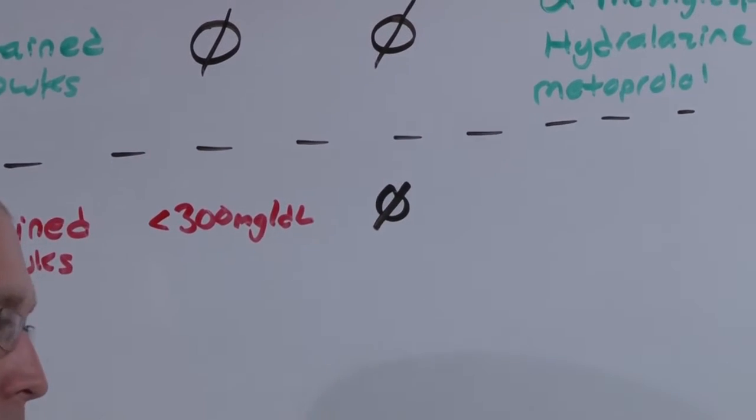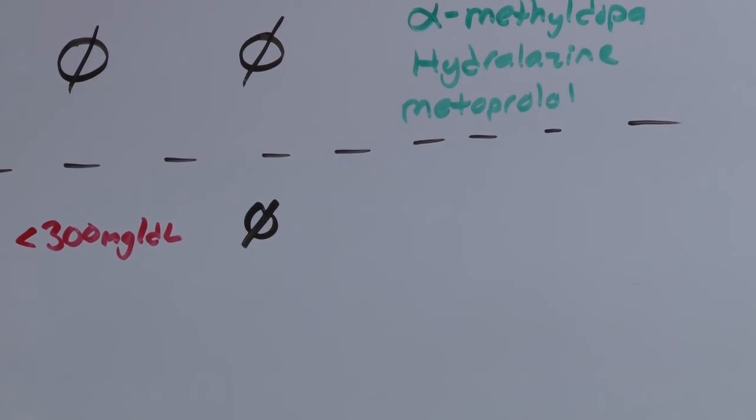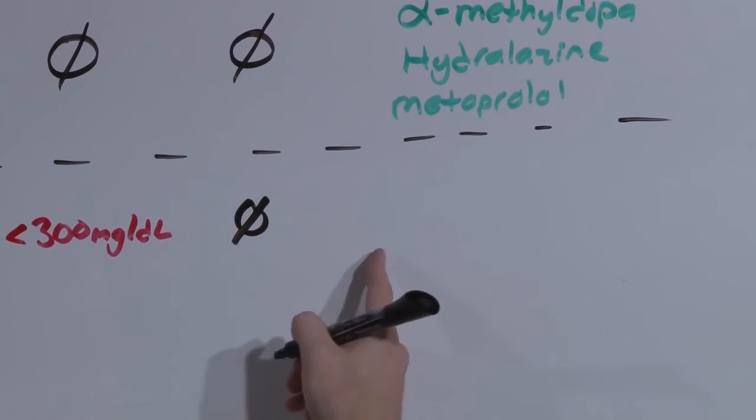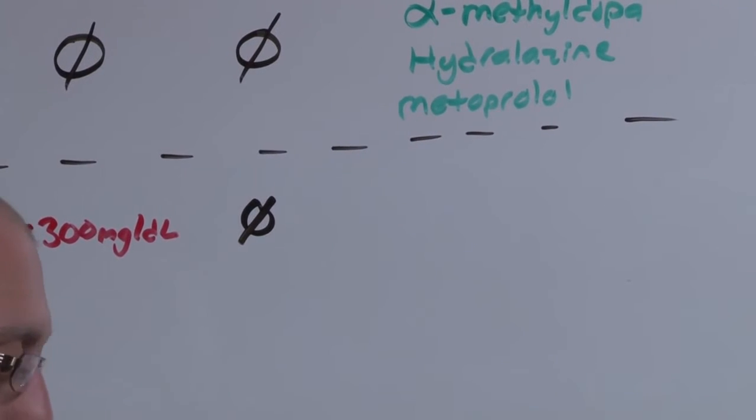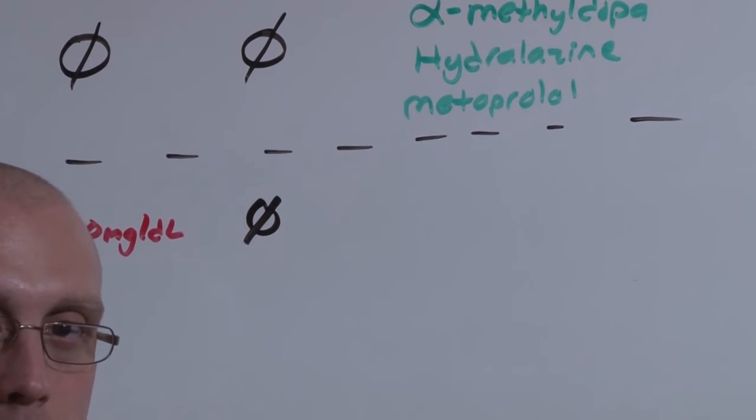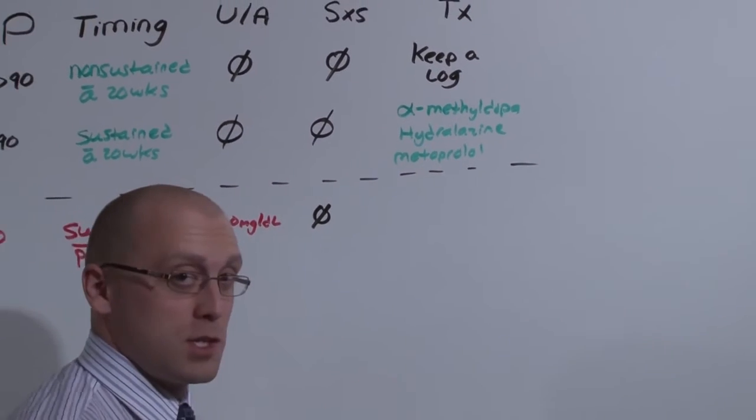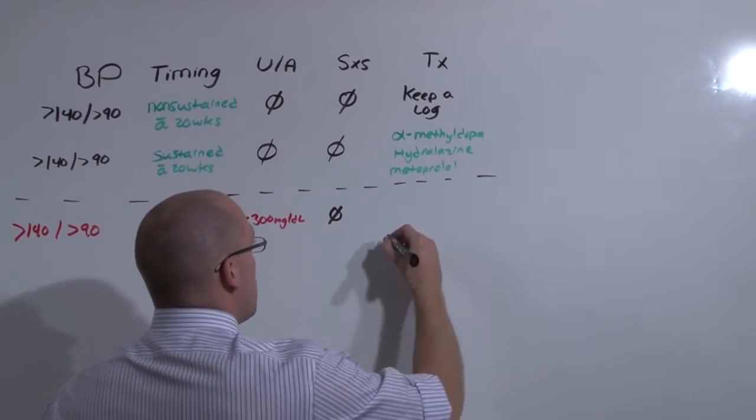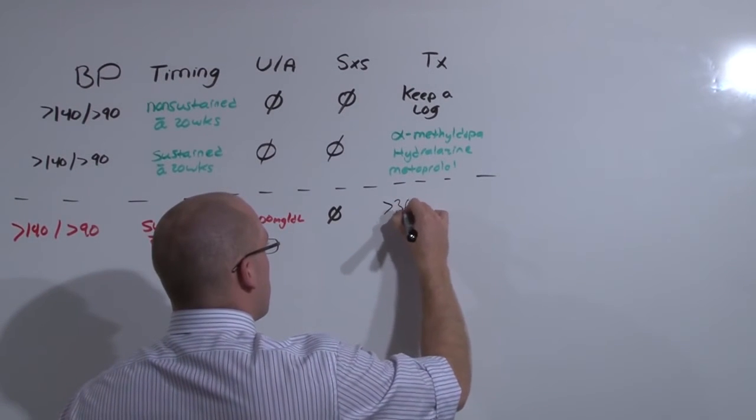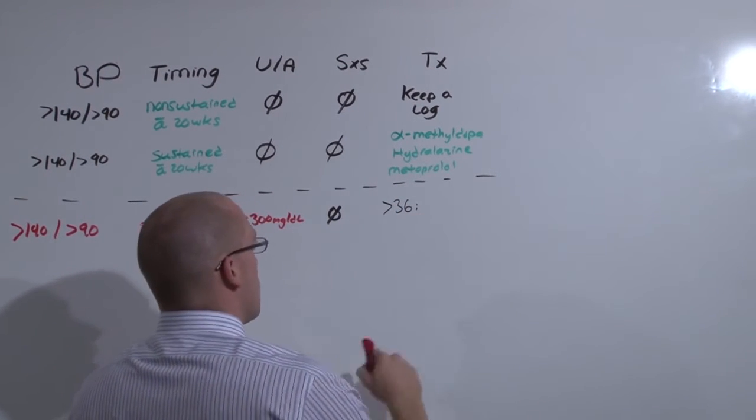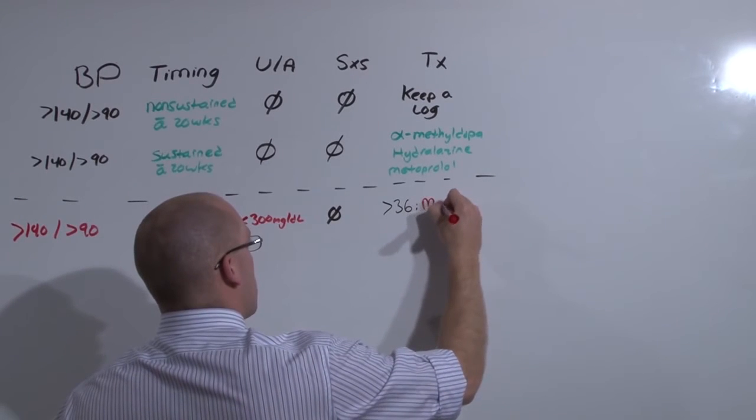What you do about mild pree is dependent on gestational age. Because right now, mild pree, mom's not in danger. She's set up to be in a dangerous spot. But right now, the only risk is to baby. So if baby is at term, mag and deliver.